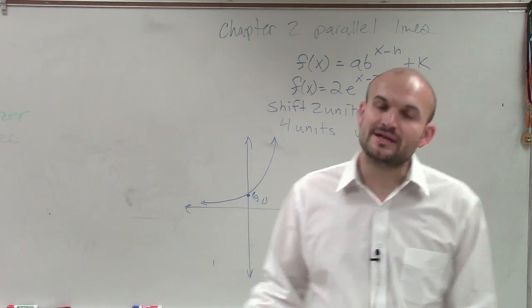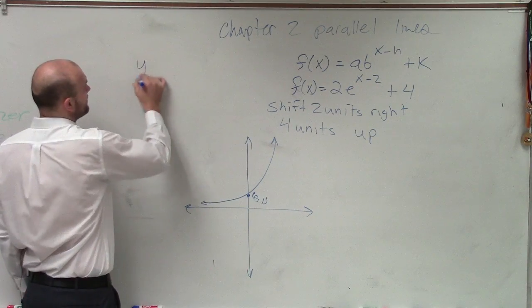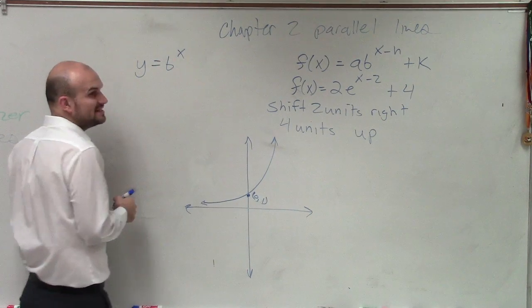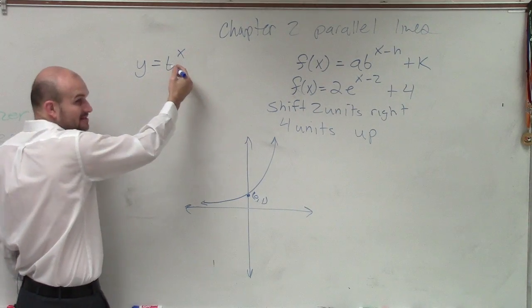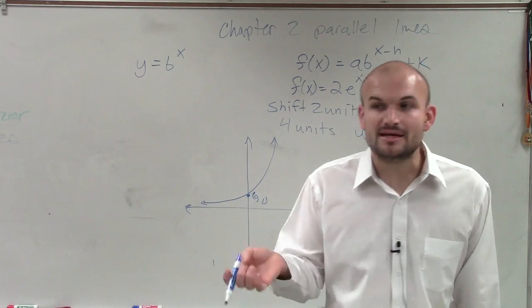That is the parent graph of the growth function. And the reason why we always have 1 raised to the 0 is because if you have just a parent graph, b to the x, it doesn't matter what b is. b can be 1, b can be 155, b can be e. It doesn't matter. b can be pi.